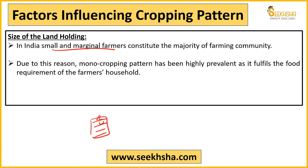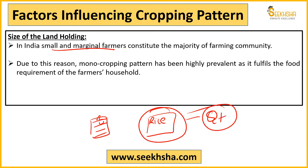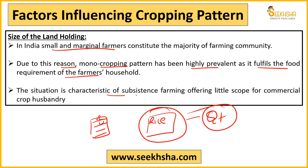A small farmer does not have sufficient quantity to sell. If he grows only rice on his land, at least the quantity will be good enough to give him some bargaining power. Inter-cropping or multiple cropping is generally practiced where land sizes are larger, so that production is enough to go to the market confidently. Due to this reason, monocropping has been highly prevalent as it also fulfills the food requirement. This is characteristic of subsistence farming offering little scope for commercial crop husbandry.